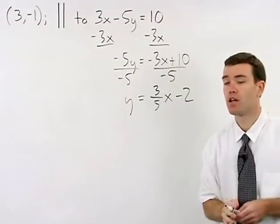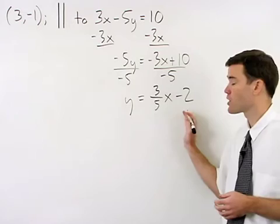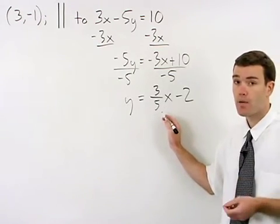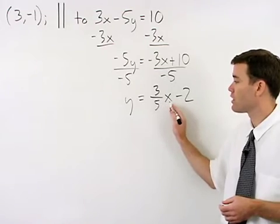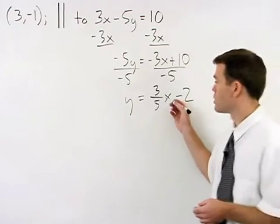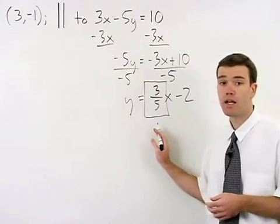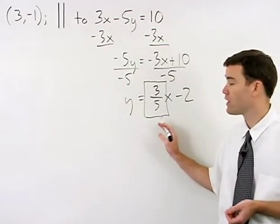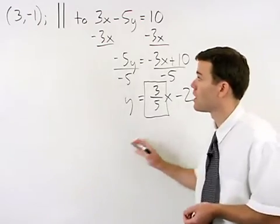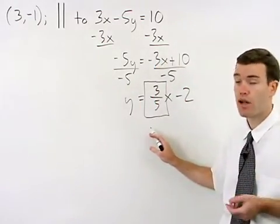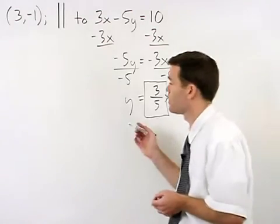Remember in slope-intercept or y equals mx plus b form, the slope of this line, or its m, is the coefficient of the x term, which in this case is 3 fifths. So this line has a slope of 3 fifths, and since our line is parallel to it, our line must also have a slope of 3 fifths.